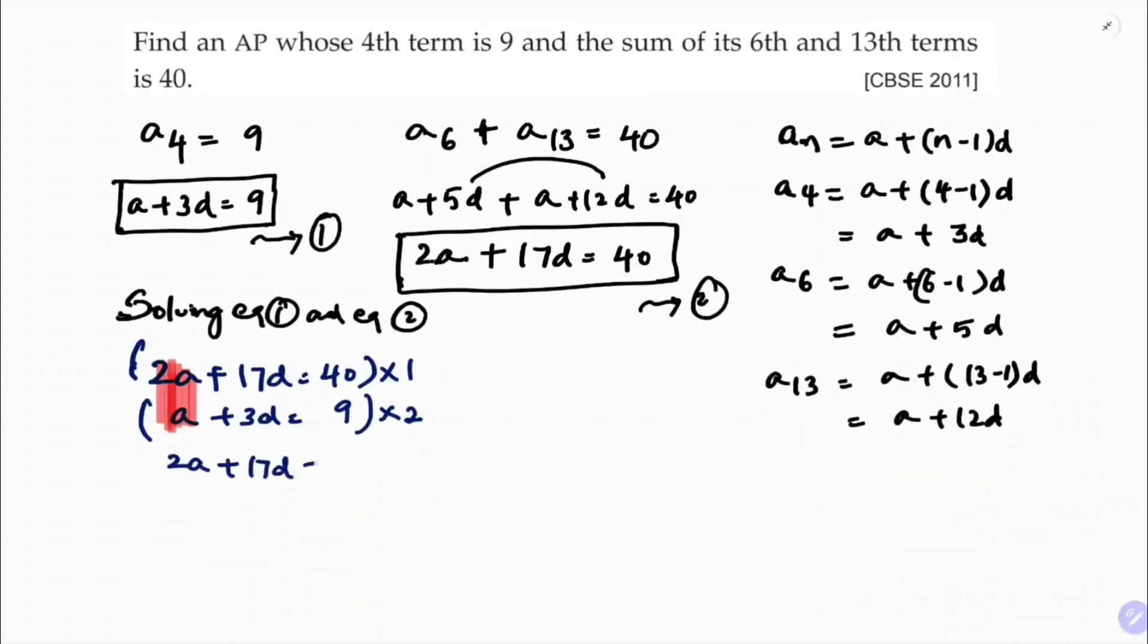So first equation will be as it is, 2A plus 17D equals 40. Second one will be like 2 times A, 2A, 2 times 3, 6D equals 2 times 9, 18.